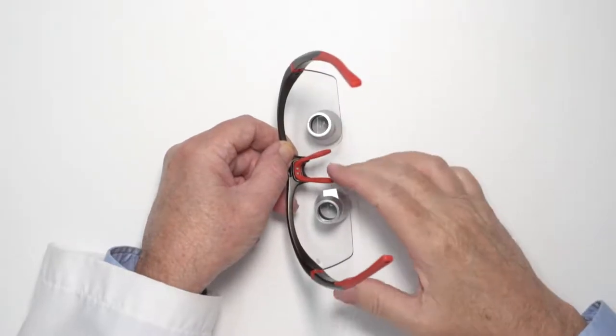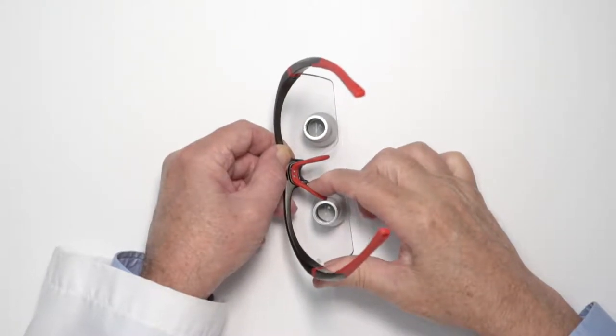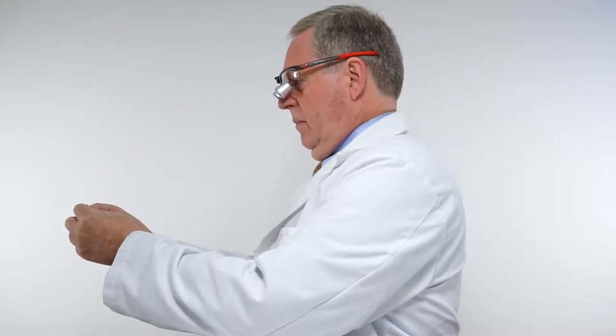If there is a shadow at the bottom of your view, your loops sit too high on your nose. You need to open the nose pads to lower the loops. If the shadow is at the top of your view, close the distance between the nose pads to make the loops sit higher. Using my fingers, I will adjust the nose pads until I get the telescopes to line up with my eyes.